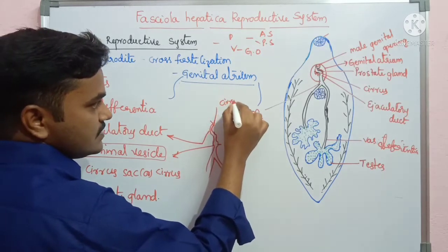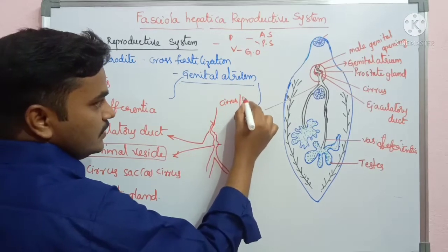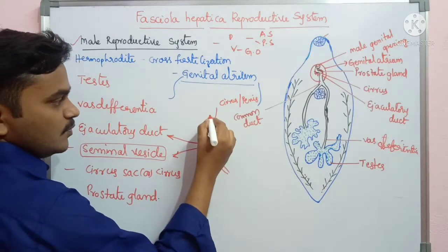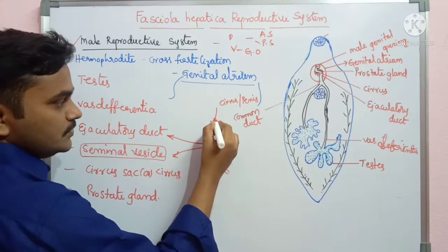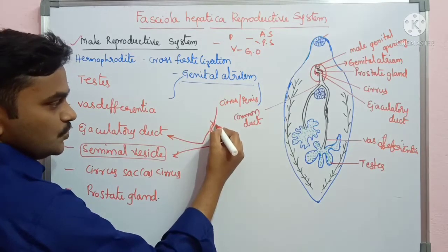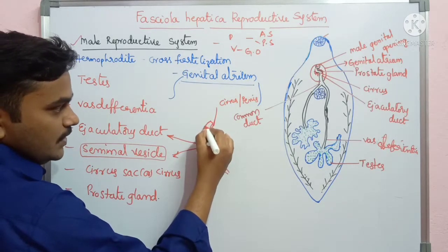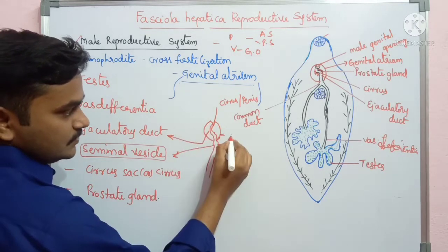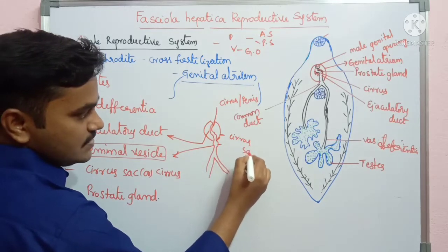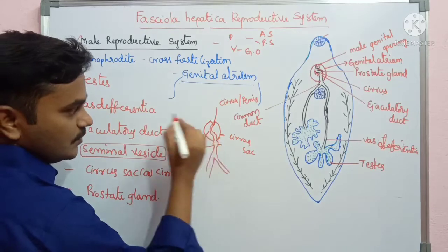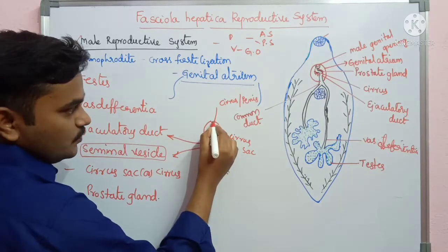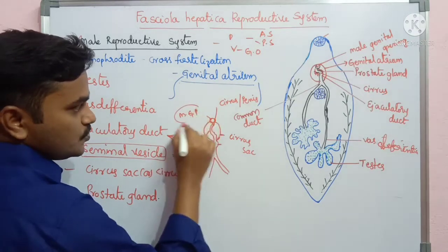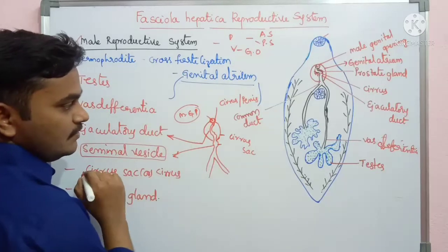There is one part called the cirrus, which is equivalent to a penis. This cirrus is enclosed within a structure called the cirrus sac. The cirrus then opens into a pore — that is the male genital pore. So ultimately, this is the male genital pore.